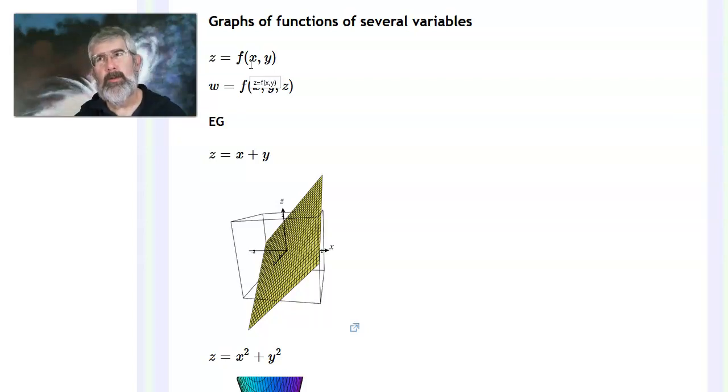So when we had functions of one variable and we were drawing graphs, we would have one axis that would be the axis for the input and one axis that would be the axis for the output. And so for each input value, you then calculate what the output is and you plot that point.